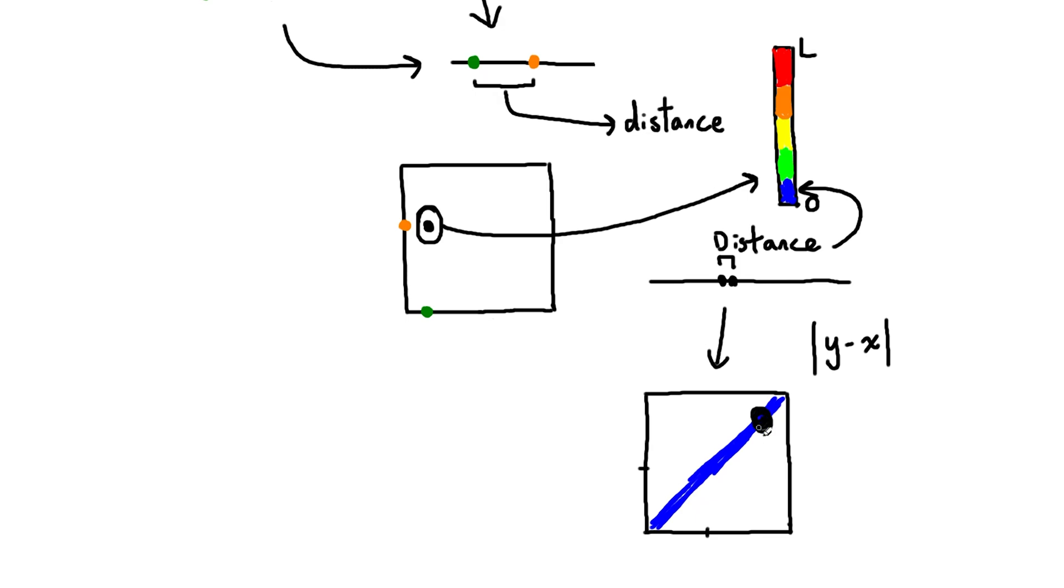Now what will the square look like? First of all, we know this diagonal will be blue, because points on this diagonal have very similar y and x coordinates, because the diagonal corresponds to the line y equals x. So therefore the distance will be very small, and everything will be blue.